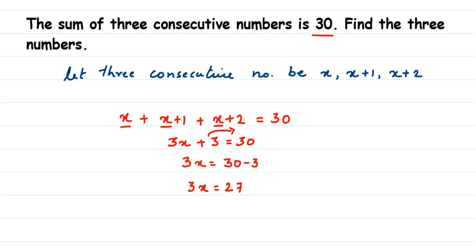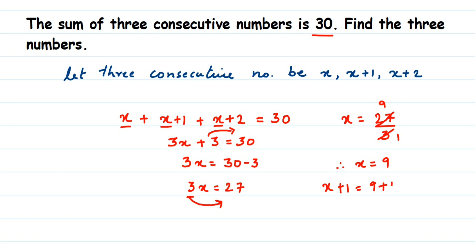We have 3x equals 27 and we need to find x. The 3 is in multiplication, so when we transpose it, it comes over as division. So x equals 27 divided by 3. In the three times table, 3 nines are 27, so x equals 9. The first number is 9. The second number is x plus 1, which is 9 plus 1 equals 10. The third number is x plus 2, which is 9 plus 2 equals 11.